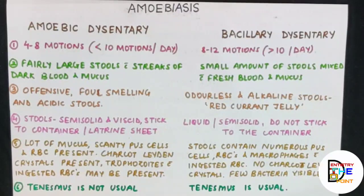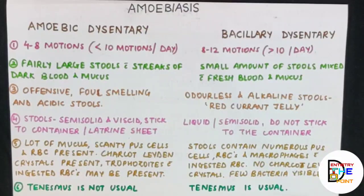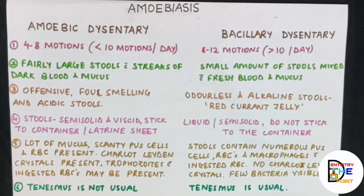The last differentiating point is tenesmus — tenesmus is not usual in amoebic dysentery, but is usual in bacillary dysentery. Tenesmus is a cramping rectal pain accompanied by a feeling of incomplete defecation — the repeated urge to go to the bathroom for a bowel movement even when nothing comes out. This feeling is commonly seen in bacillary dysentery but is not a common feature of amoebic dysentery.